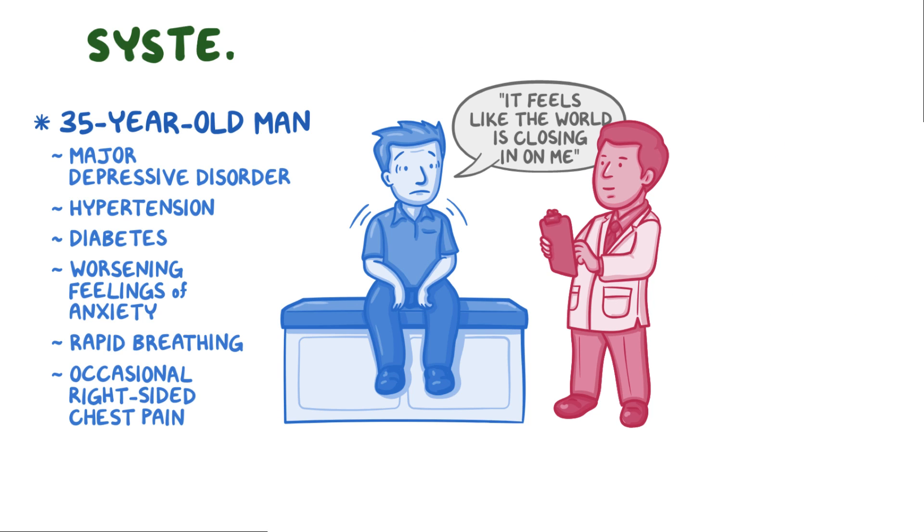But if System 2 thinking had been deliberately used, the clinician might have recognized that there's one aspect of this story that stands out. It's the right-sided chest pain. Rather than a panic attack, this man may actually be having an atypical presentation of a heart attack.